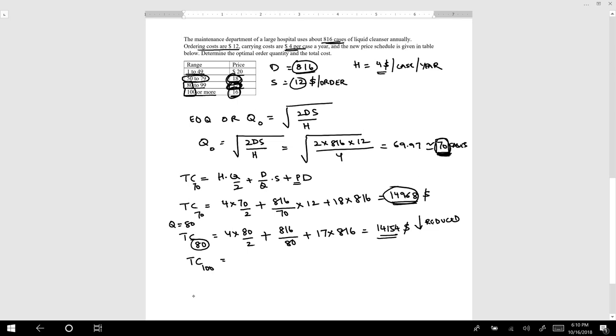H will be the same. H is 4 multiplied by, now I am ordering Q equals 100, divided by 2, plus the demand D is 816 over Q, which is 100, multiplied by S, which is $12, plus now I am getting a new price for the product for ordering 100 units, which is $16, times 816. If I calculate this, my total cost would be $13,354. Again, it decreased. So the best option would be to order 100 because that is going to give us the least overall cost.